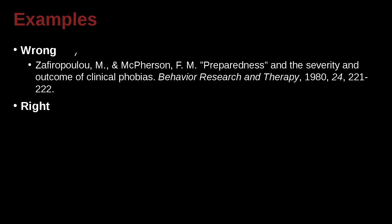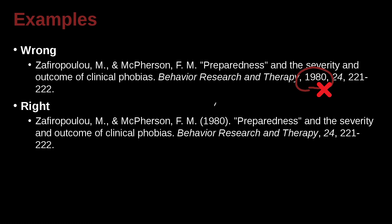Zapfrupolu, M.N. and McPherson, F.M. — last name first, last name first. The article is 'Preparedness and the severity and outcome of clinical phobias,' published in Behaviour Research and Therapy. The date is in the wrong position — it needs to come right after the last period following the author's name, in parentheses, then a space. The journal's name and volume number are italicized, but the page numbers are not italic.